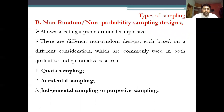Non-random sampling allows selecting a predetermined sample size. You know how much the sample size is that you are interested in, and the focus is on that sample size. There are different non-random designs, each based on a different consideration, which are commonly used in both qualitative and quantitative research. Major types include quota sampling, accidental sampling, and judgmental or purposive sampling.